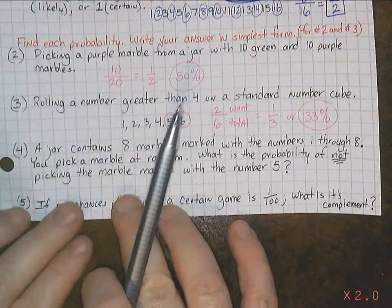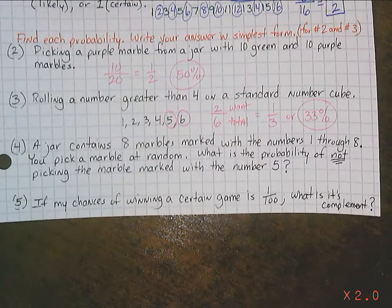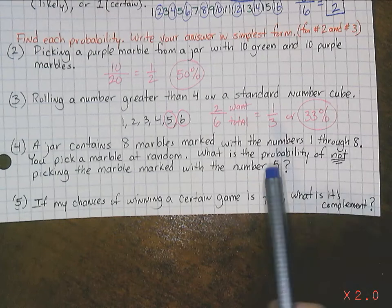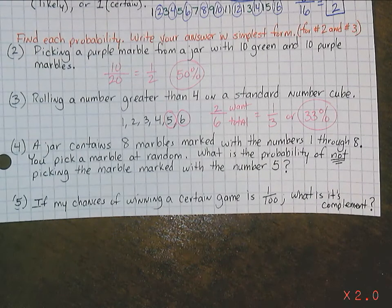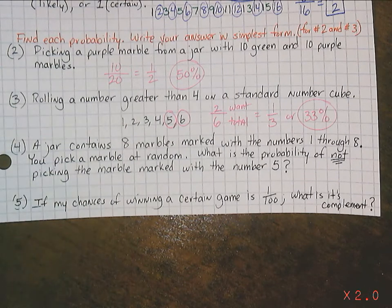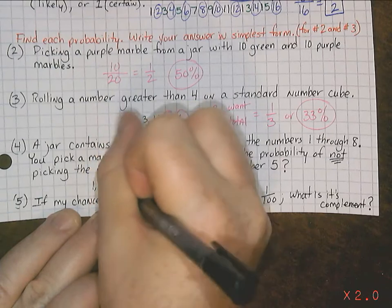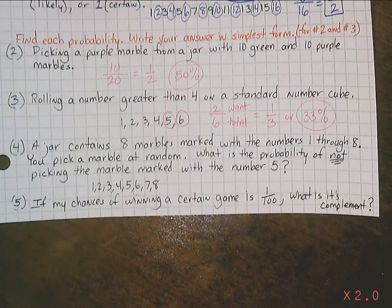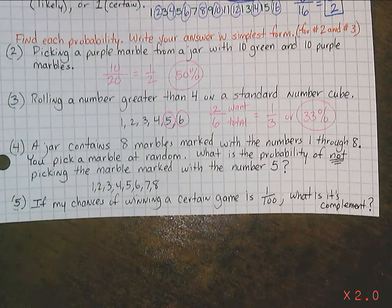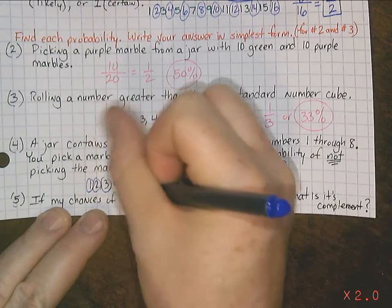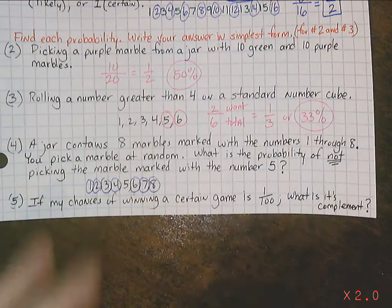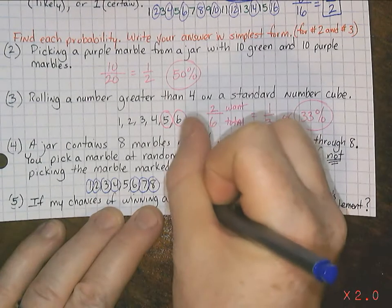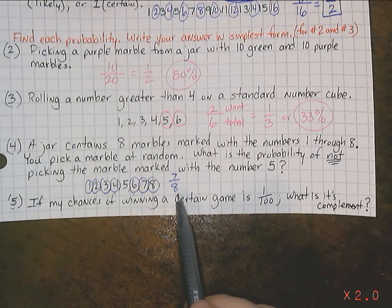Number 4. A jar contains 8 marbles marked with the numbers 1 through 8. You pick a marble at random. Obviously. Because if you pick the one that you want, you're going to win every single time. What's the probability of not picking the marble marked with number 5? Well, again, if you create a sample space, you've got 1, 2, 3, 4, 5, 6, 7, 8. Well, what's not 5? Well, a lot of numbers. 1's not 5. 2's not 5. 3, 4, 6, 7, 8. So, what's the probability of you picking a marble that's not 5? Well, you've got 7 of them. So, 7 out of 8. That's a pretty high chance.